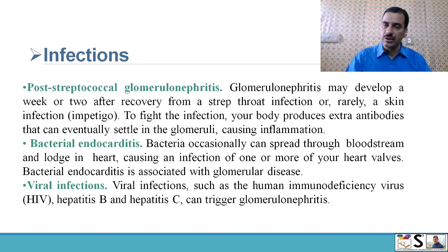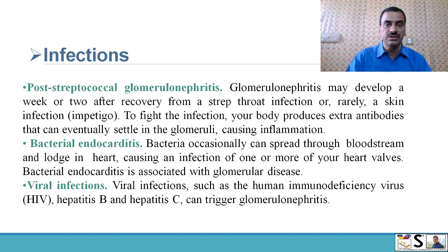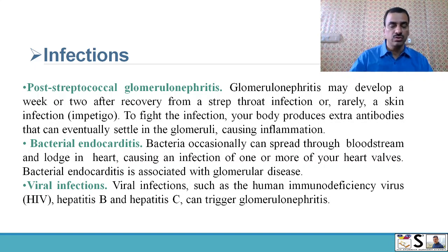Second, bacterial endocarditis: bacteria can occasionally spread through the bloodstream and lodge in the heart, causing infection of one or more heart valves. Bacterial endocarditis is associated with glomerulonephritis. Third, viral infections such as human immunodeficiency virus (HIV), hepatitis B, and hepatitis C can also trigger glomerulonephritis.